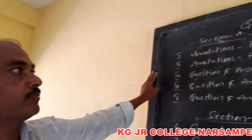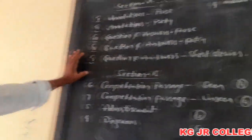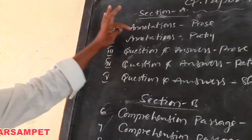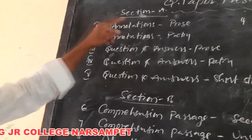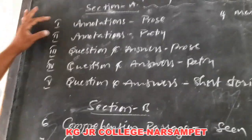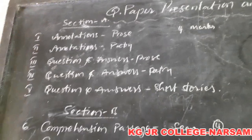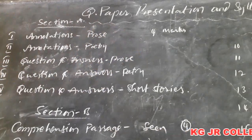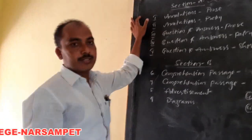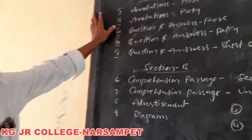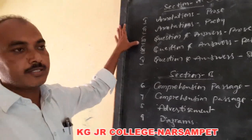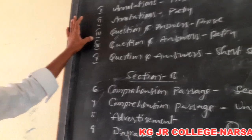This question paper is categorized into three sections: Section A, Section B, and Section C. In Section A, the first bit is annotations from prose — three annotations will be given and you have to choose any two and write them using the method of reference, context, explanation, and critical analysis or critical comments. The next bit is annotations from poetry, which follows the same method.